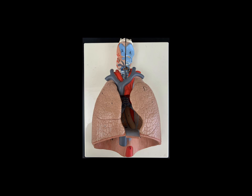First, right up here at the top, this blue structure is the larynx — sometimes called the Adam's Apple or the voice box. This is that hard structure that you feel right in the middle of your throat. Coming down from the larynx, this tube right here — your windpipe — is called the trachea.